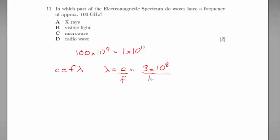And F, 1 times 10 to the power of 11. Which will give us 3 times 10 to the minus 3 meters as our wavelength.